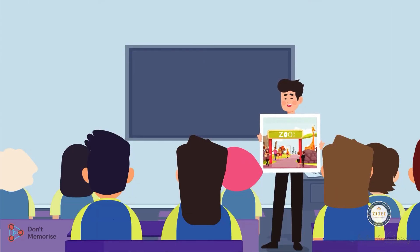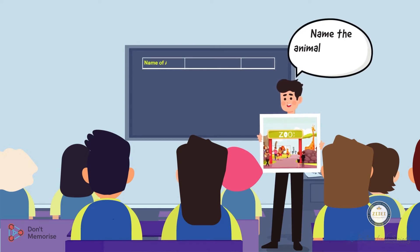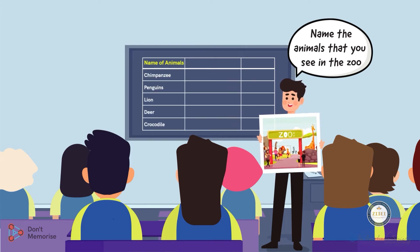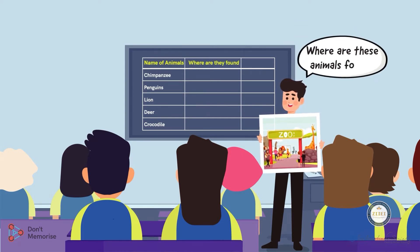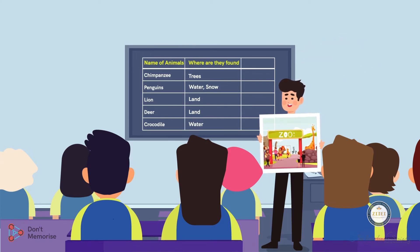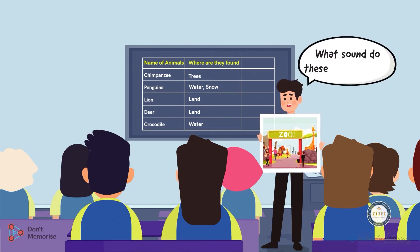We will ask a few leading questions based on the picture. Begin by asking the students to name the animals that they can see in the zoo, and accept all possible responses from them. Once the students have finished, ask them to tell us where these animals are found — that is, if they are found on land, in the water, or on the trees, and so on. Also ask the students to tell us what sounds these animals make.